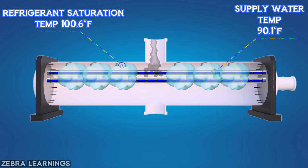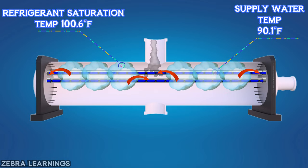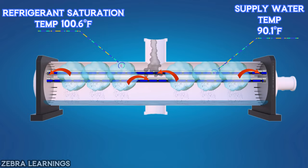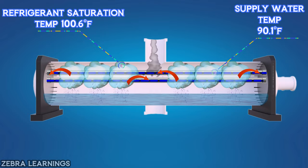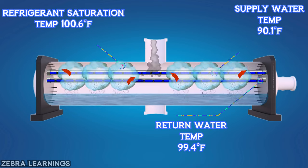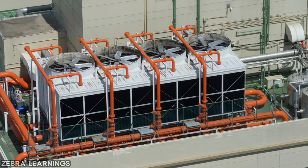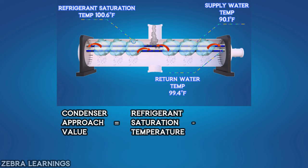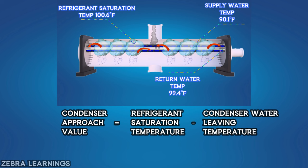Heat is transferred from the high-temperature refrigerant to the low-temperature water, causing the refrigerant to decrease in temperature and change from vapor to liquid. Since the heat from the refrigerant is transferred to the water, the water leaves the condenser at 99.4 degrees Fahrenheit, then goes to the cooling tower where it is cooled before returning. The condenser approach value equals refrigerant saturation temperature minus condenser water leaving temperature: 100.6 degrees Fahrenheit minus 99.4 degrees Fahrenheit equals 1.2 degrees Fahrenheit.